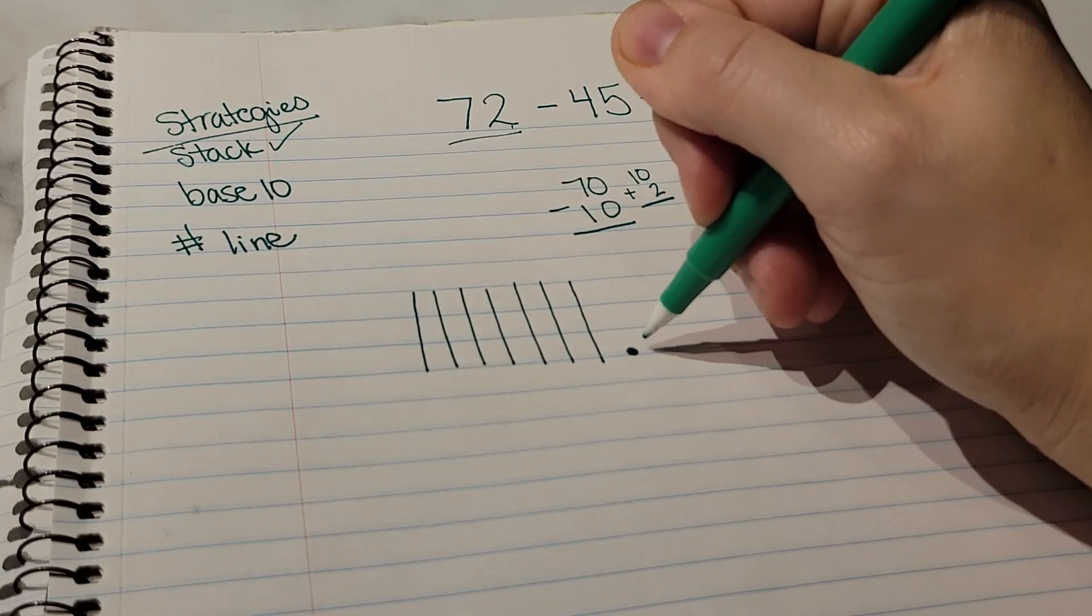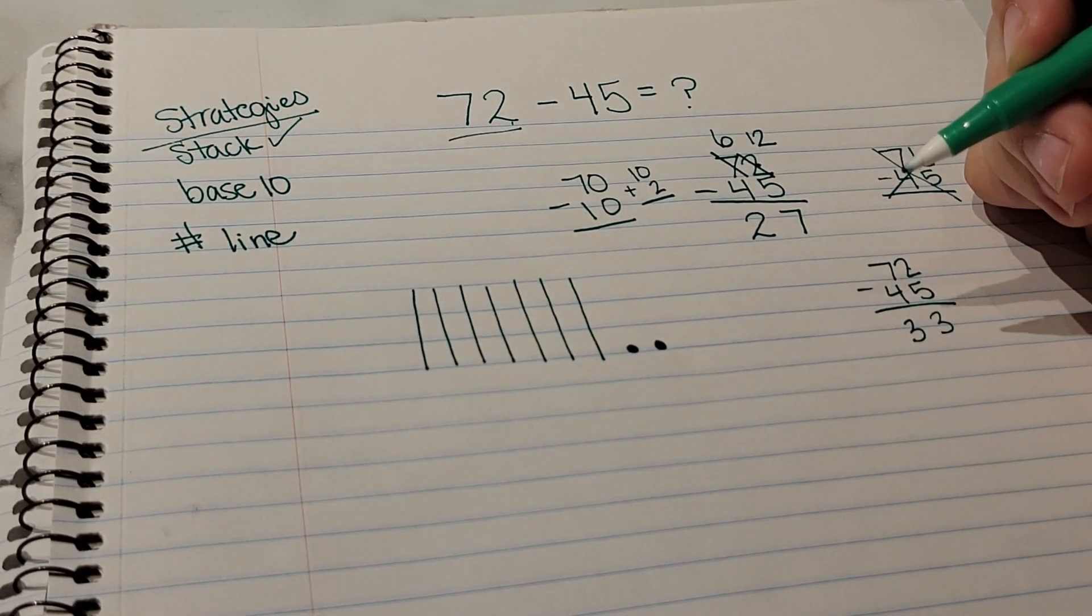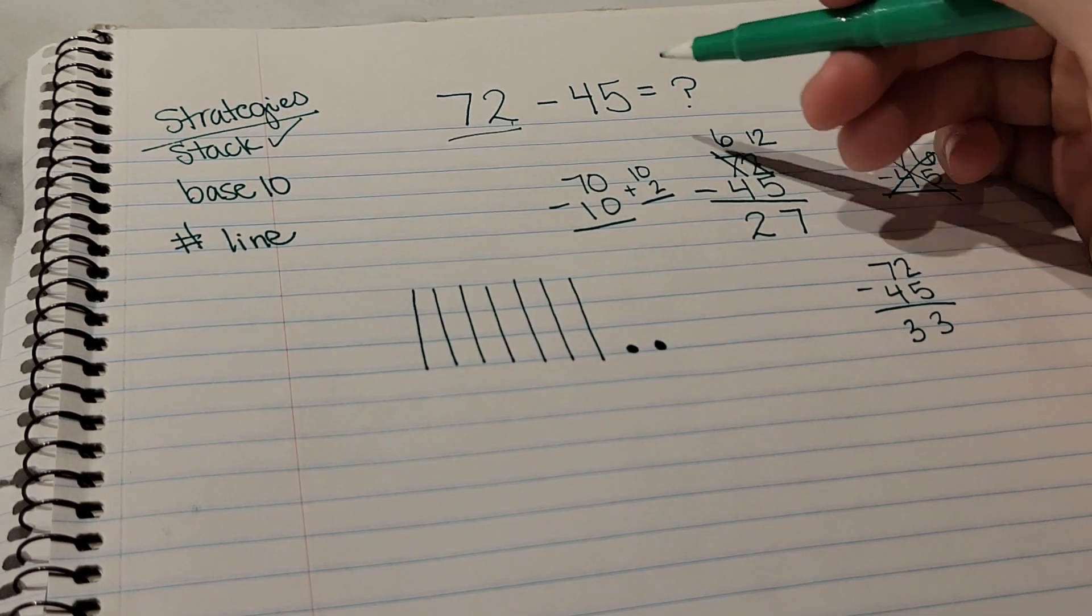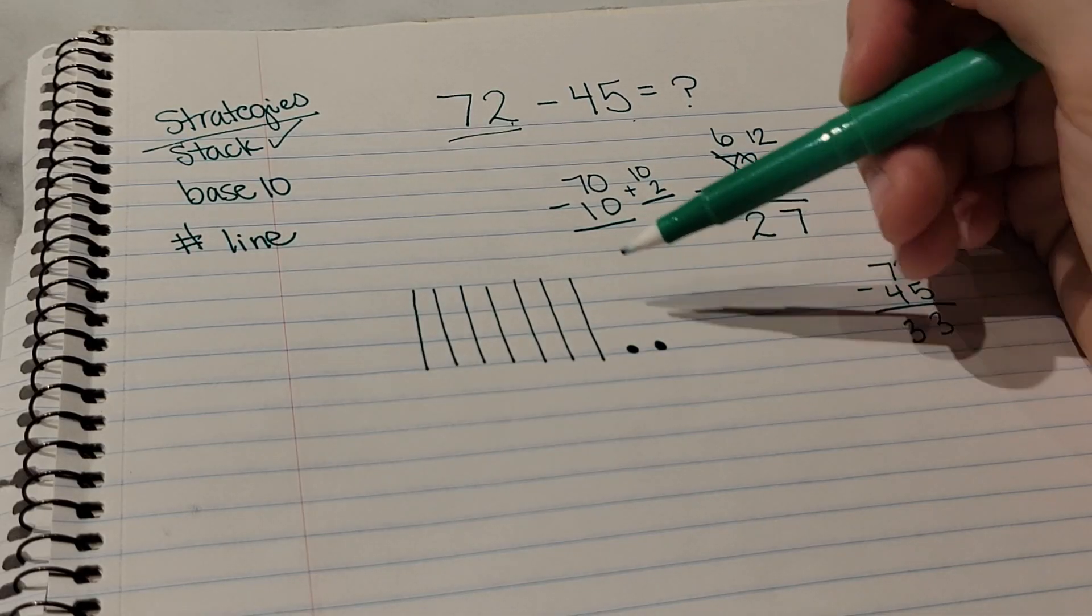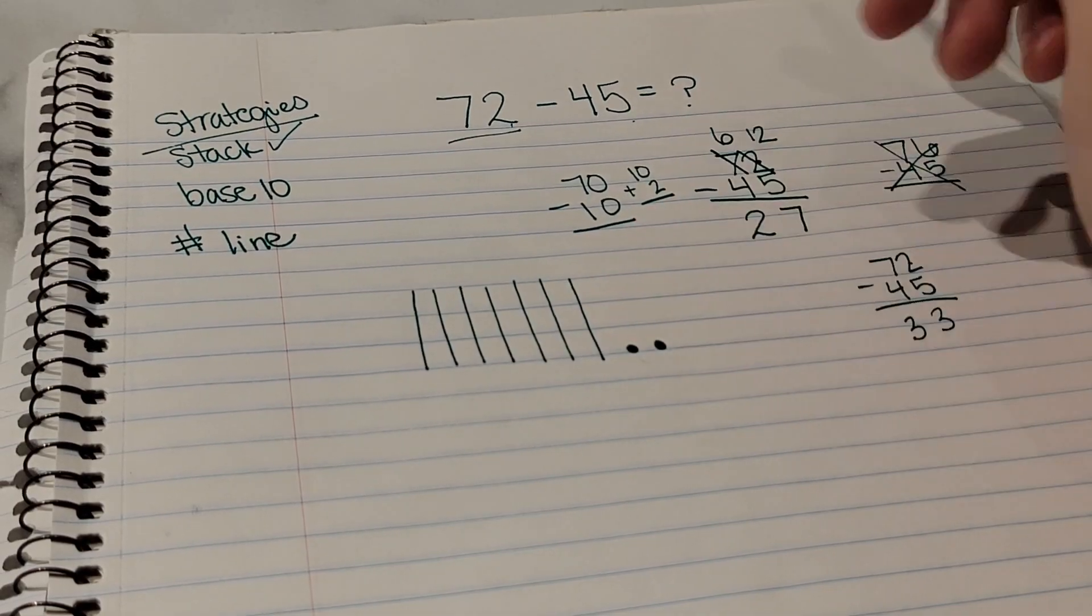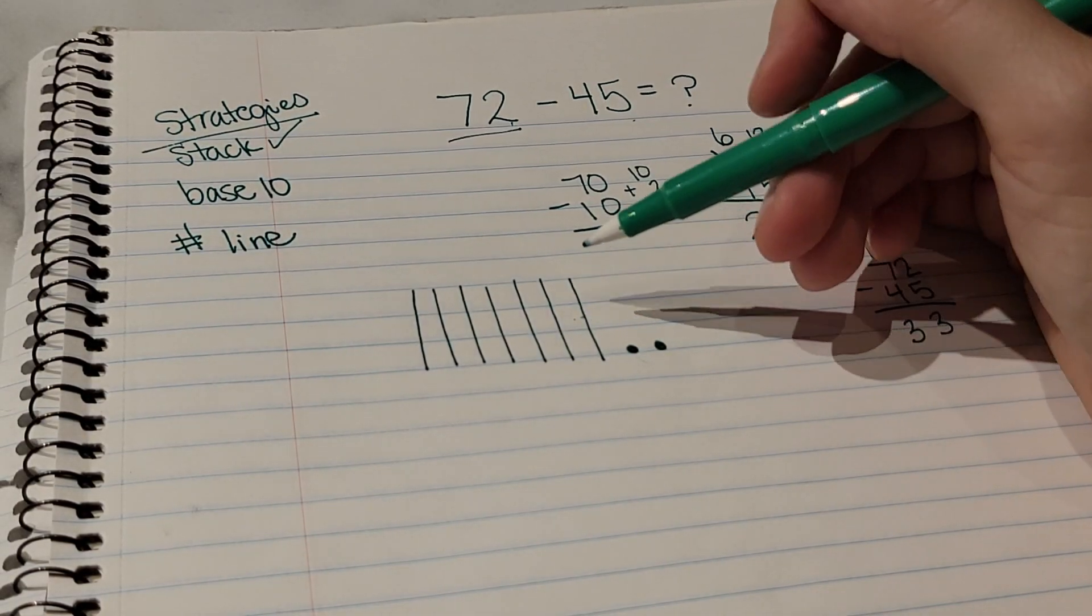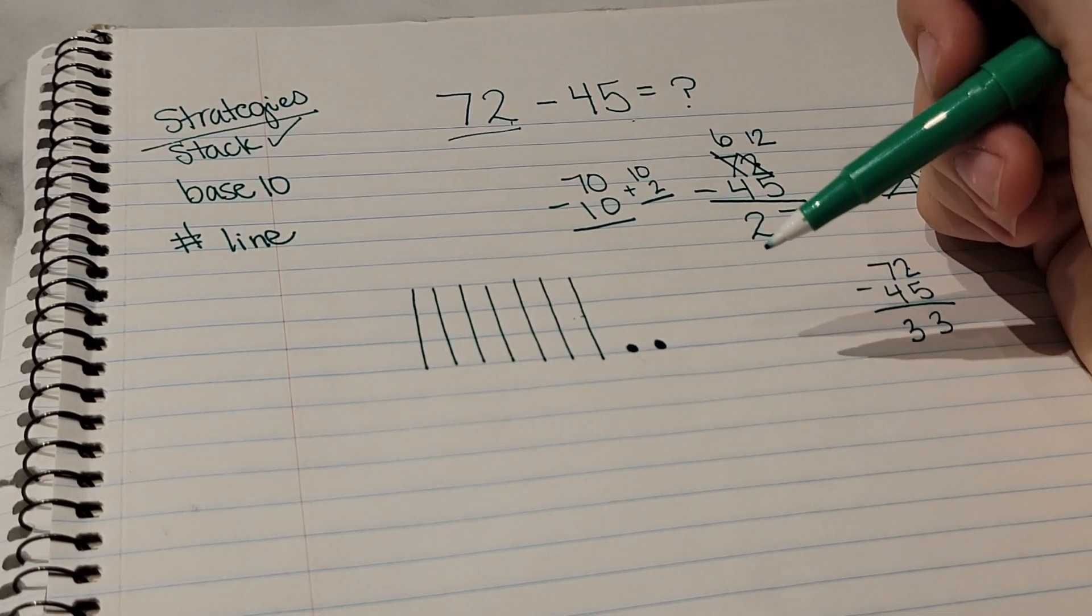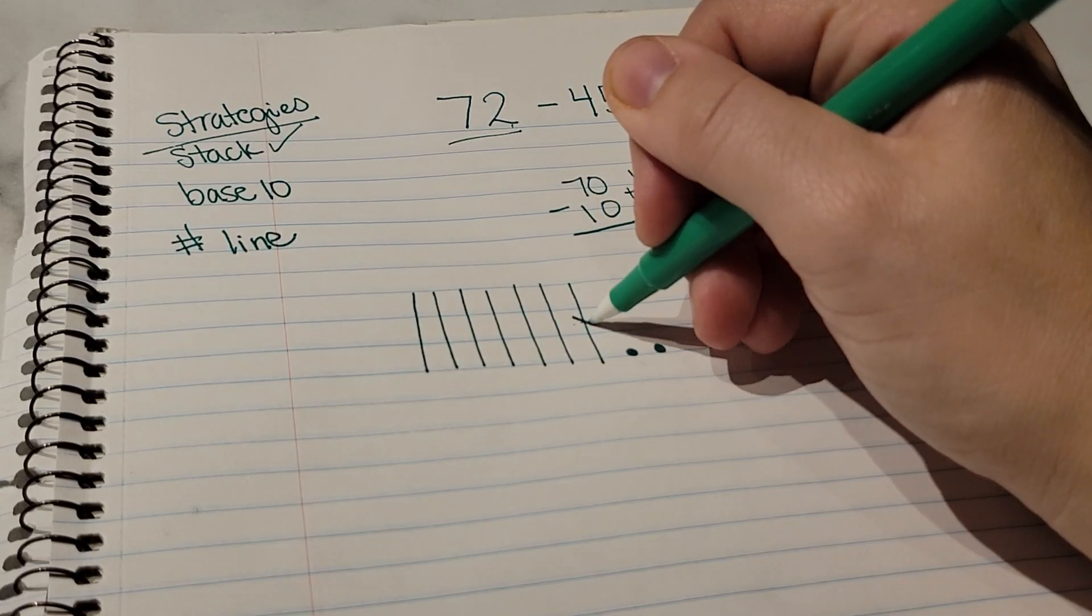60, 70. And then we're going to draw two ones cubes, which we do in partners side by side with a circle. Then I'm going to look at my second number and subtract 45. Now I can't subtract 45 from this picture because I only have 2 in my ones place, so what I'm going to do is exchange this one tens rod for 10 single ones. I'm going to draw a second picture for that.